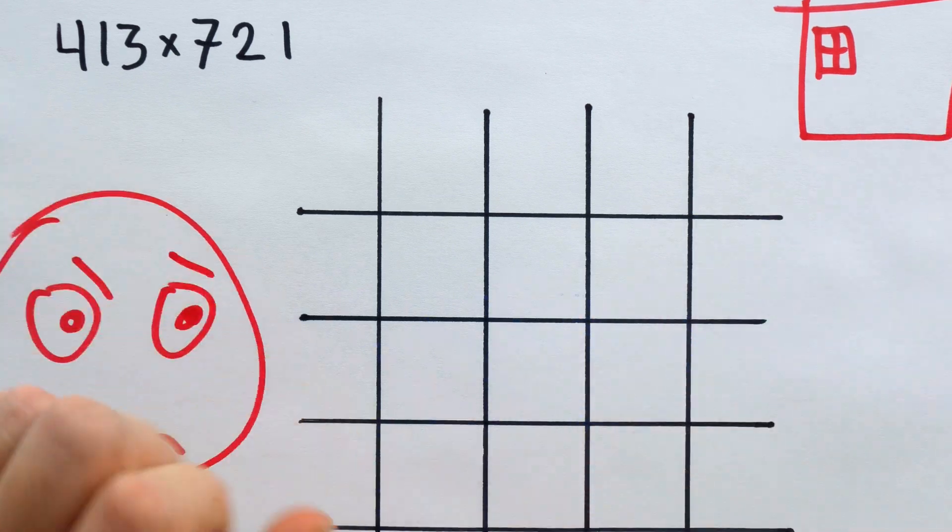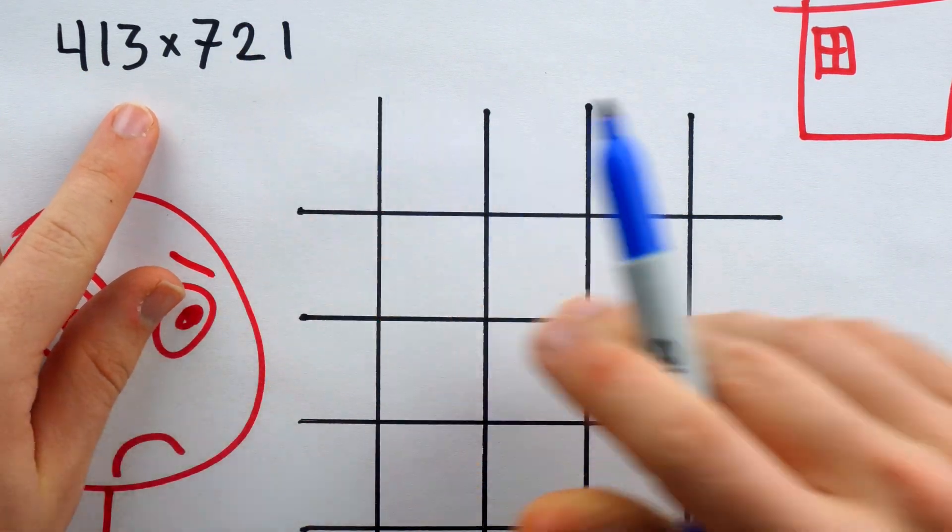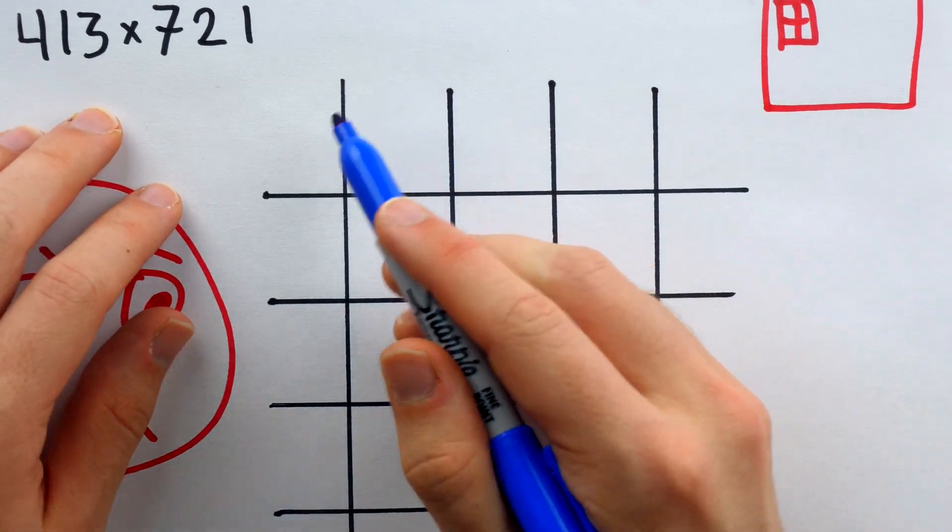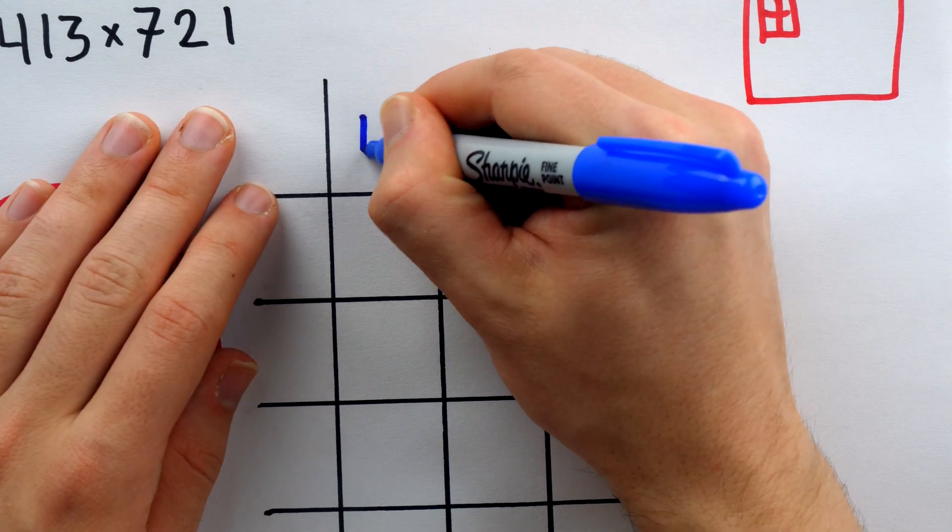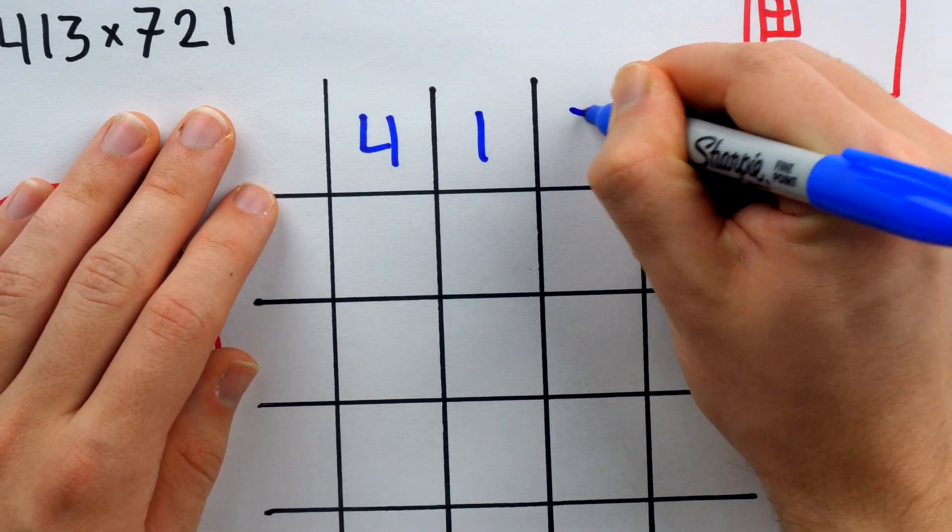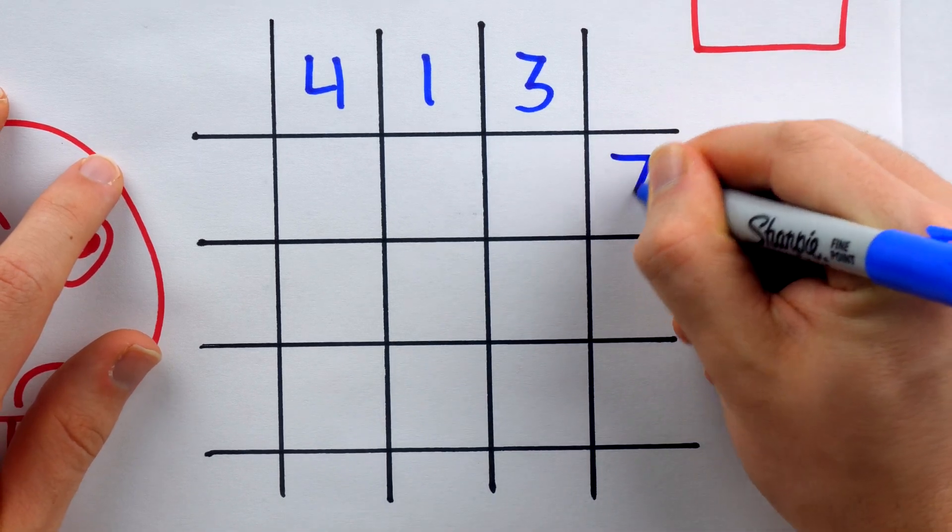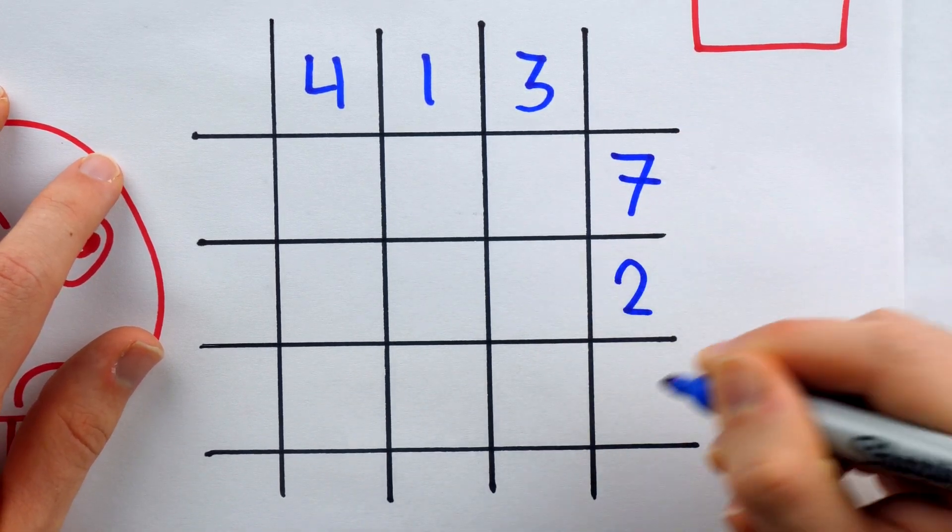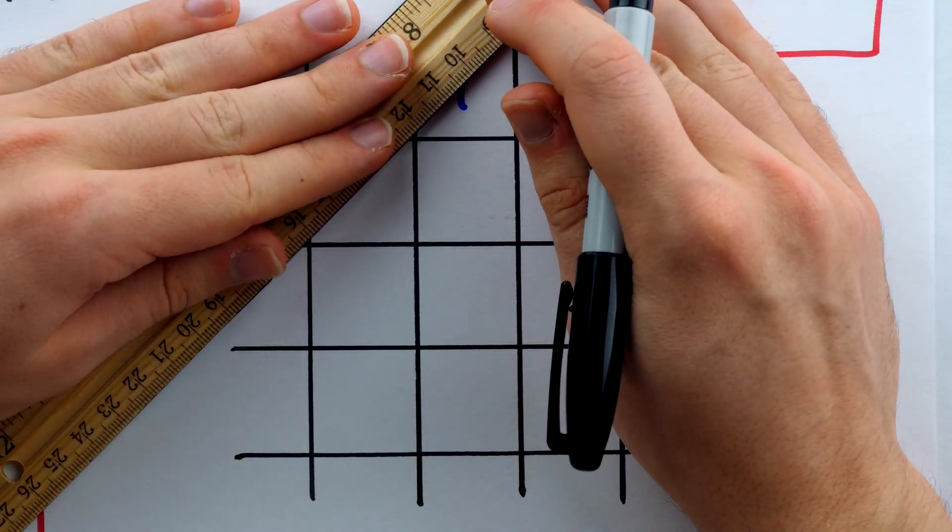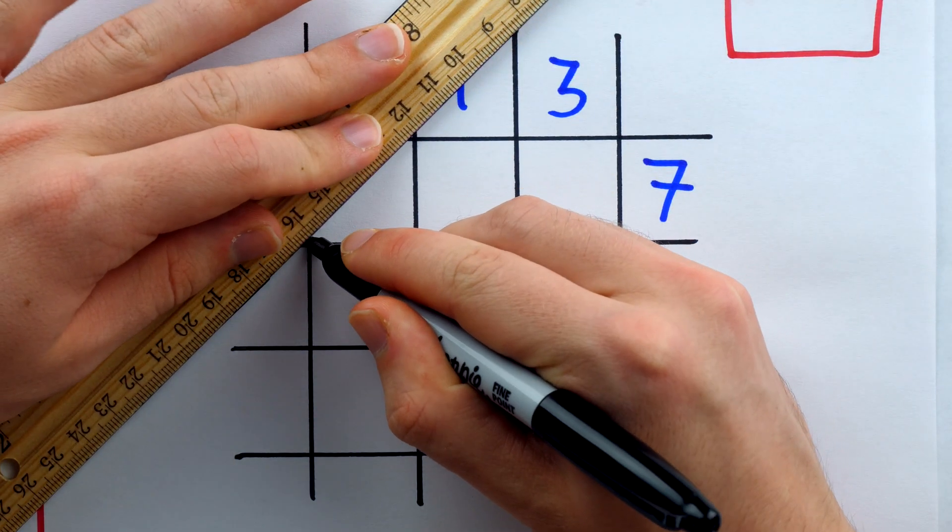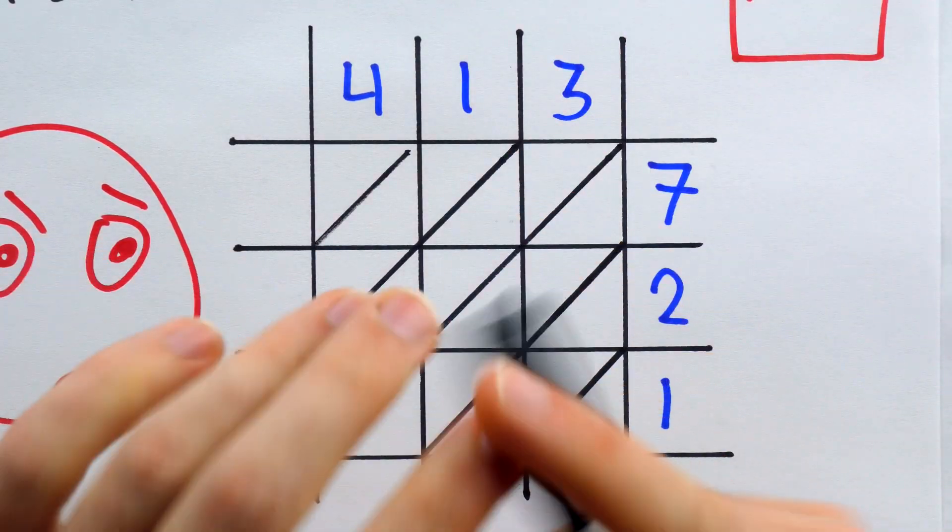And what they see is multiplication, specifically 413 times 721. In the top row of the grid that is formed by this window, we have 413. Each digit gets a column. Going down the right side, each digit of 721 gets a row. And then one last thing, each of these squares in the window needs to be cut by its diagonal. And with that, we're finally prepared to do the multiplication.